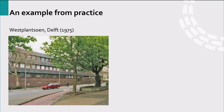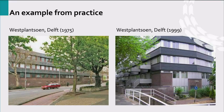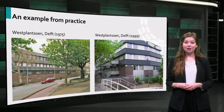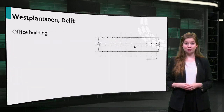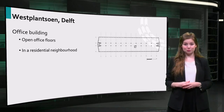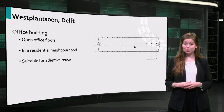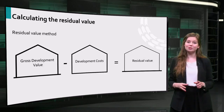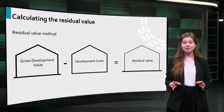Now let's look at an example from practice. This is the Westmansoen building in the Dutch city of Delft. It is a former office building that has now been transformed into dwellings. We will use this example to explain the residual value method. The Westmansoen building used to be an office building which consisted of open office floors, and it was located in a residential neighborhood. The building was considered suitable for adaptive reuse.